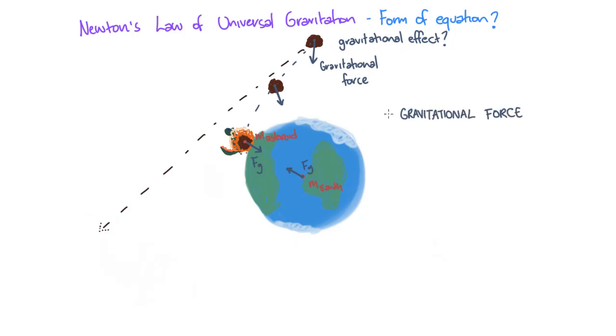Taking this a step further, we know from Newton's third law that for every force, there is an equal force in the opposite direction. So if the asteroid is attracted to the Earth, then the Earth must be attracted to the asteroid.